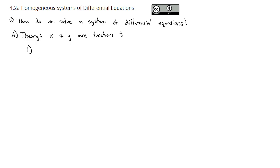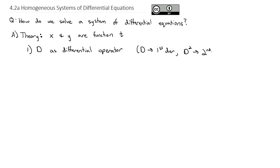The method we're going to use to solve these introduces the operator d as the differential operator. d represents the first derivative, d squared the second derivative, d cubed the third derivative, and d to the fourth the fourth derivative. This allows us to take a system of equations such as x prime equals 4x minus 3y, and y prime equals 6x minus 7y, and generate solutions for x and y in terms of the parametric variable t.